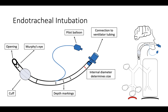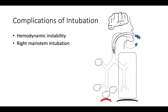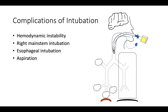The ideal location of the endotracheal tube tip is 2 to 3 centimeters above the carina. Intubation can cause hemodynamic instability, and patients who are already unstable are at higher risk for cardiac arrest. Additional complications include right main stem intubation — more common due to the right main stem's straighter, more vertical orientation — and esophageal intubation. These are assessed by listening for bilateral breath sounds and using a colorimetric end-tidal CO2 detector, which turns yellow when CO2 is detected, confirming tracheal placement. Other complications include aspiration of gastric contents and oral or airway trauma.